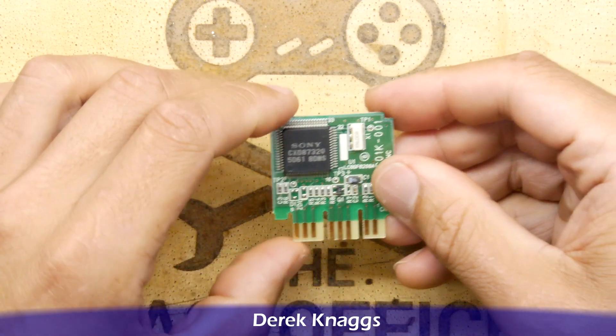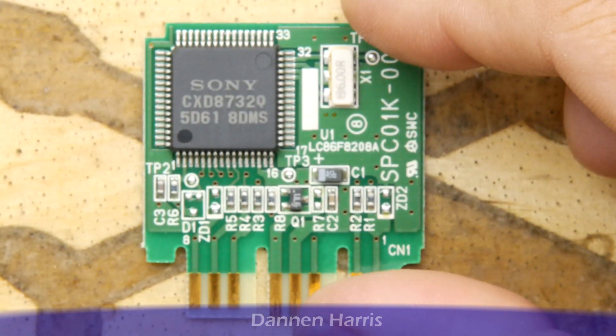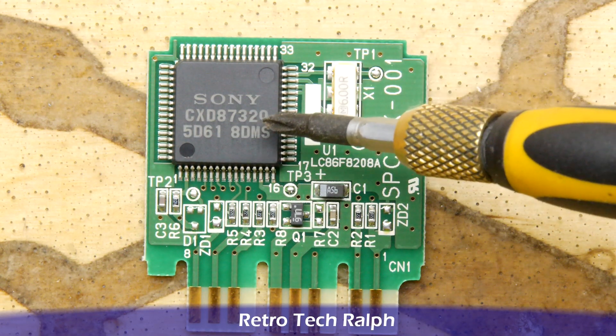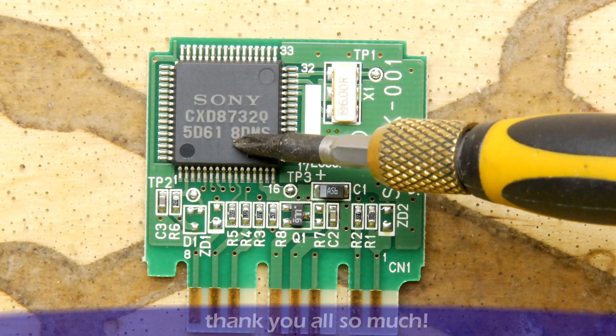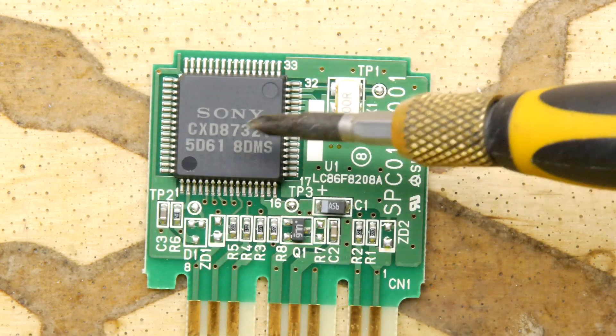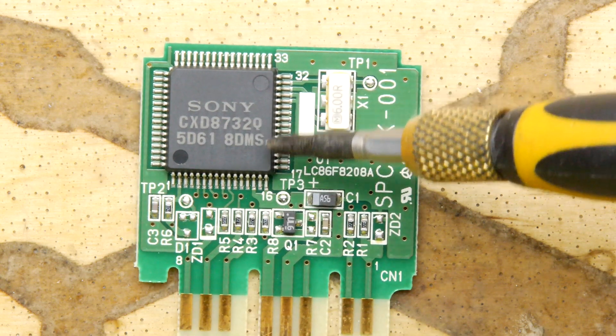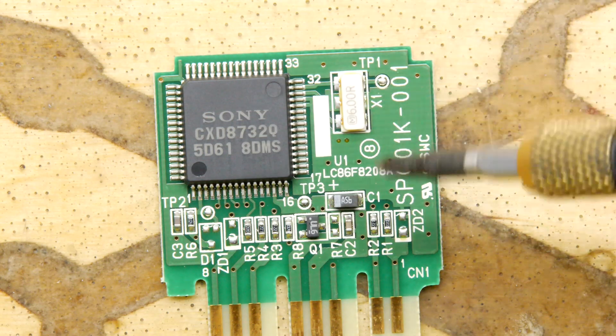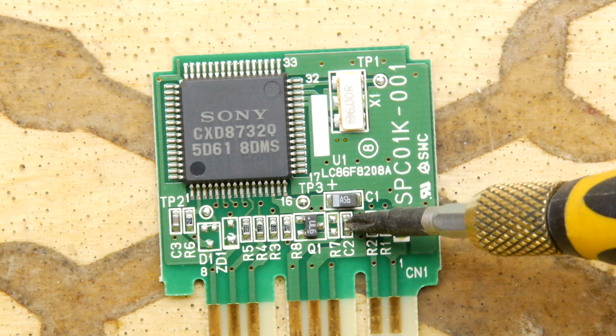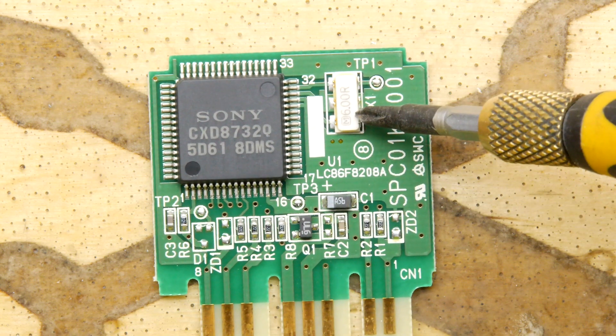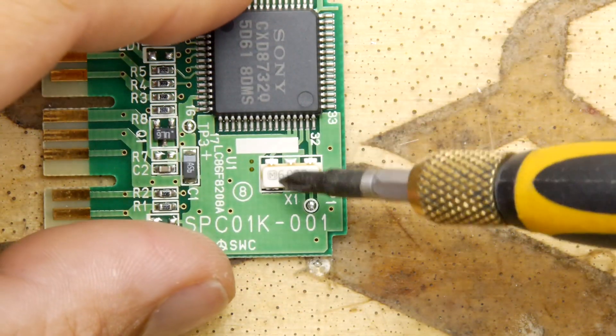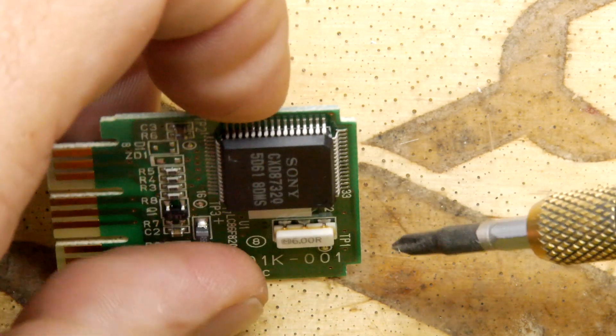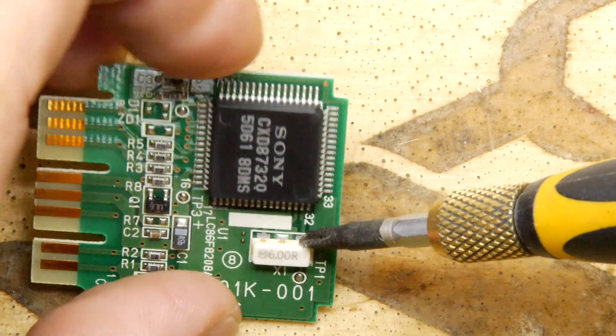Right, so we have a Sony custom chip which is a GXD87329 or an O—you decide what that is—some resistors, a couple of capacitors, a diode here. But what's this bad boy? Now, I have to admit this is an unusual thing. I mean it's a package with six legs and it says 6R.